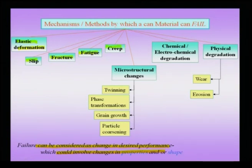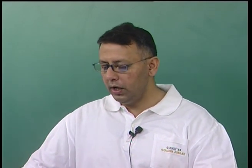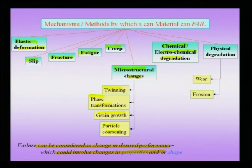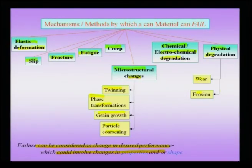There is creep, and we will see that there are many creep mechanisms which can actually lead to failure. Microstructural changes themselves can lead to failure — for instance, twins and stresses related to twins, phase transformations, grain growth, and particle coarsening. Chemical or electrochemical degradation including corrosion and oxidation can also lead to failure, as the material degrades on the surface. Physical degradation like erosion can also lead to failure, which is very important when you have two components in contact, like a gear wheel, or a blade operating under water propelling a ship.